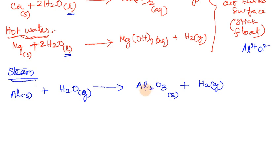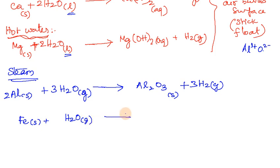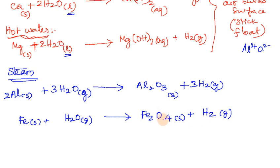Let's balance the aluminium reaction: aluminium is 2, oxygen is 3, hydrogen is 3 becoming 6. Oxide count is 3 — balanced. The product is Al₂O₃, aluminium oxide, plus hydrogen gas. For iron reacting with steam, the product is Fe₃O₄.